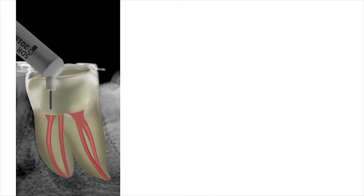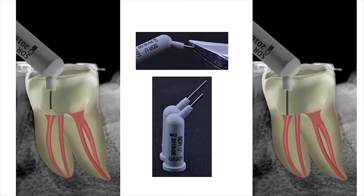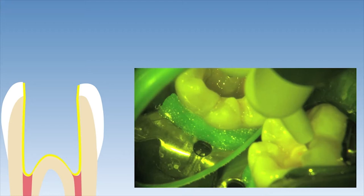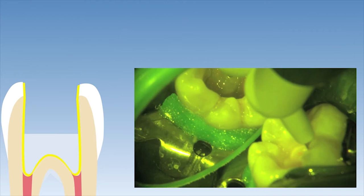The next step is to fill up the bulk of the cavity with SDR flowable bulk fill material. It is very important to make sure that the delivery tip of this material is placed directly onto the pulp floor; otherwise voids will be incorporated when dispensing the material. If the tip is too short to reach the floor, especially in deep access cavities, it is possible to pull the tip out with orthodontic pliers and extend it a few millimeters. A thin layer of approximately 2 millimeters of SDR flowable bulk resin is then dispensed onto the pulp floor covering the exposed gutta-percha material and light cured for 40 seconds.